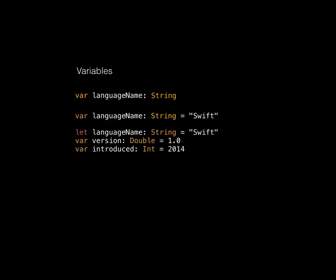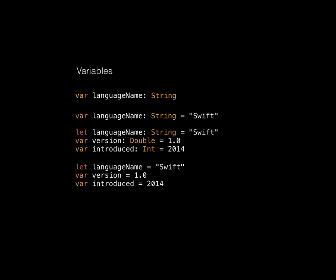You can create all other data types any way you like, but one neat thing about Swift is that data typing is implied. So `languageName`, `version`, and `introduced` are exactly equivalent whether or not you explicitly declare the types — Swift will work out the data types based on what's going in. The variable is still strictly typed as a String, Double, or Int, so you'd still get a compile-time error if you tried putting a String into `version`.